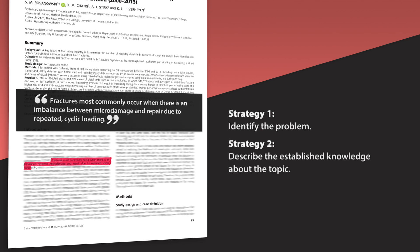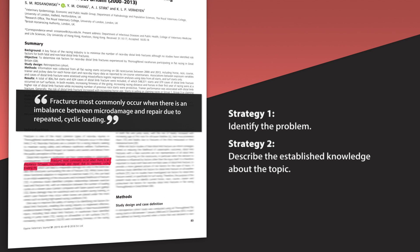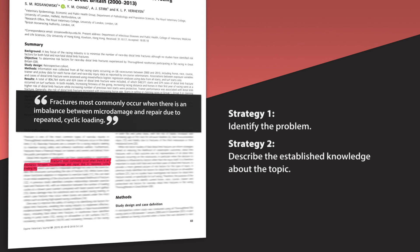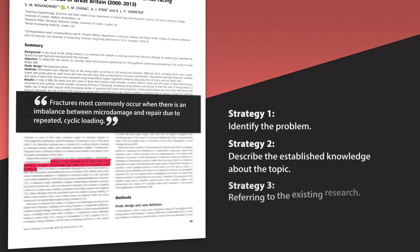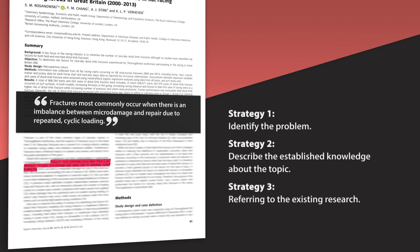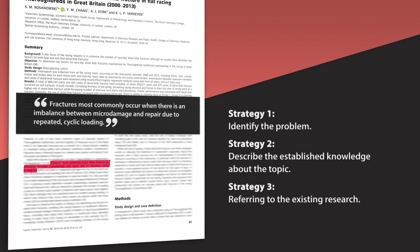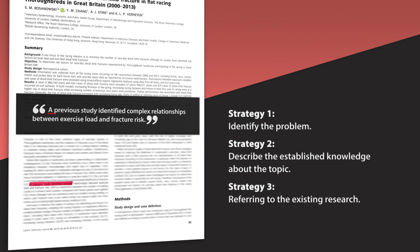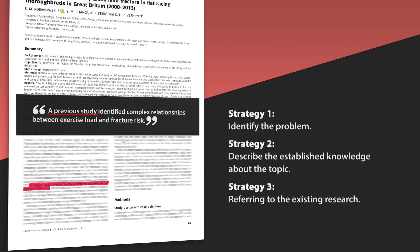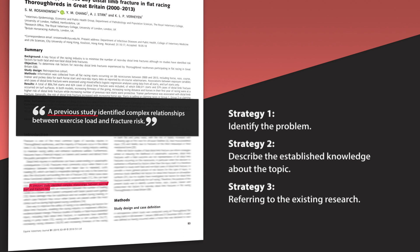Another strategy is to describe what we already know about the topic. Here's an example: 'Fractures most commonly occur when there is an imbalance between micro damage and repair due to repeated cyclic loading.' Describing what we already know often involves a third strategy — referring to existing research — like this: 'A previous study identified complex relationships between exercise load and fracture risk.'